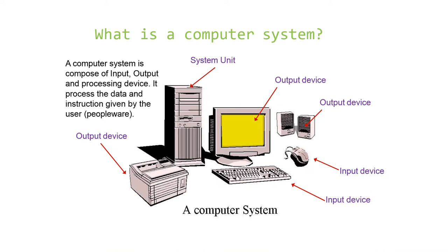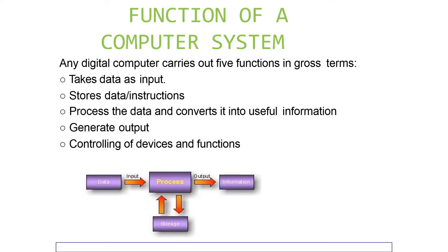What is a computer system? A computer system is composed of input, output, and processing devices. It processes the data and instructions given by the user. Any digital computer carries out five functions: takes data as input, stores data and instructions, processes the data and converts it into useful information, and generates output.